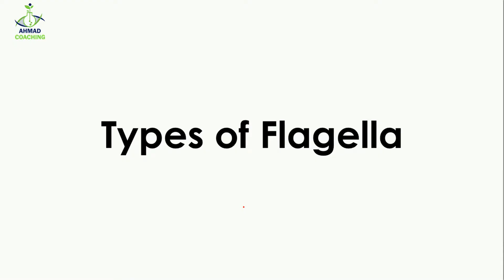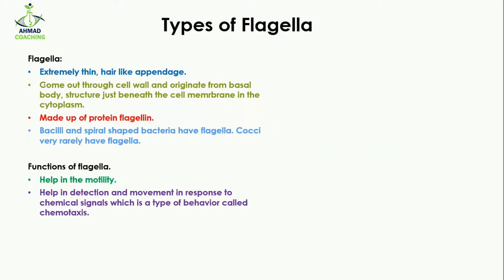Today we are going to study about types of flagella. Flagella are extremely thin, hair-like appendages that act just like legs and hands in bacteria — so instead of hands and legs, bacteria have flagella. The singular of flagella is flagellum, so when one structure is present it is known as flagellum, and when more than one structure is present it is known as flagella.